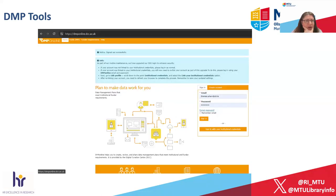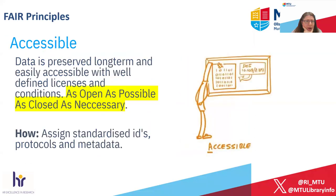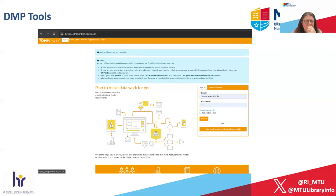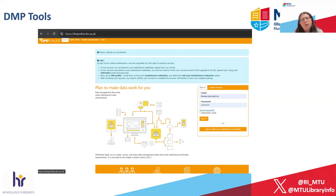So there are four FAIR principles — that was a quick run through. FAIR is the overarching principle of how we put together our data management plan and how we plan for it to be FAIR. One of the best ways to do that is to state all of the requirements of a data management template, and also utilise a really good data repository such as Zenodo, or a specialist data repository related to your subject area.